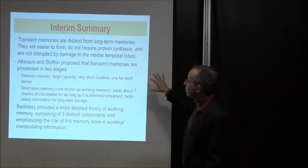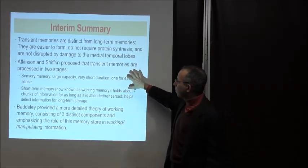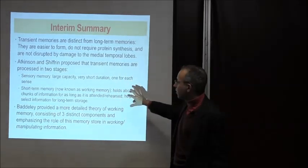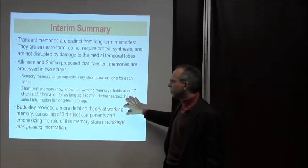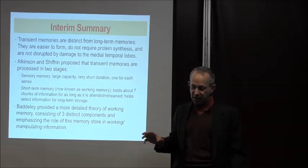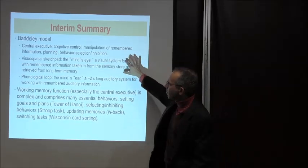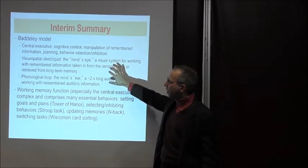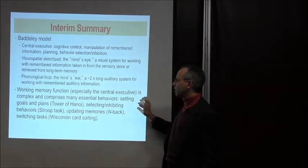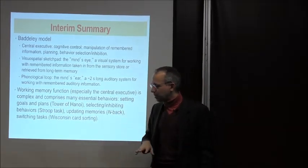Summary of the behavioral section: Transient memories are distinct from long-term memories — they're easier to form, don't require protein synthesis, and are not disrupted by medial temporal lobe damage. Atkinson and Shiffrin proposed two stages: sensory memory, with large capacity, short duration, and one for each sense; and short-term memory, also known as working memory, which holds about seven items. Baddeley provided a more detailed theory with three components: a central executive for control, manipulation, and planning; a visuospatial sketchpad — the mind's eye; and a phonological loop — the mind's ear, storing about two seconds of information.